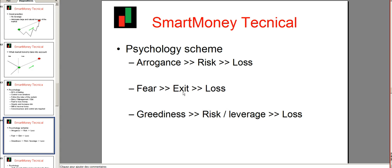One can exit a trade, close a trade because of fear — this is bad emotion control. The same with greediness: someone is winning, making good money, wants to earn more, increases leverage, and finally loses money. The analysis was good, the entry was good, the target was good — the only problem is leverage, which is too high because of greediness.